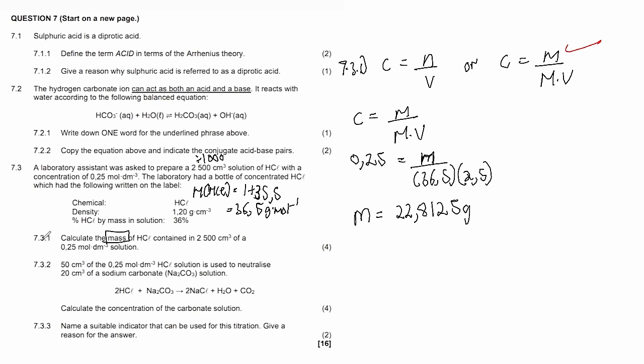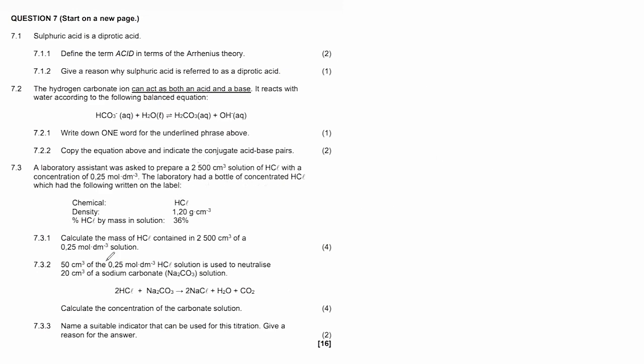7.3.2 says 50 cm³ of the 0.25 mol/dm³ HCl solution is used to neutralize 20 cm³ of sodium carbonate solution. From reading the statement we can tell that this is a titration reaction because we are told that the acid will neutralize the base. We are given two volumes and one concentration, so our HCl solution is what we call the standard solution because this is the solution with a known concentration.